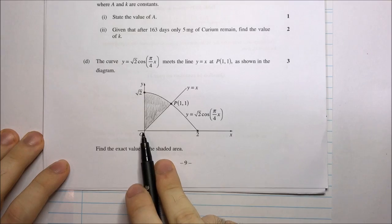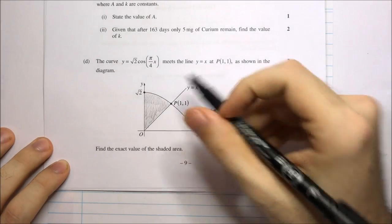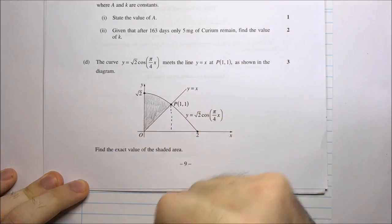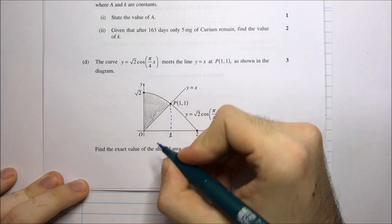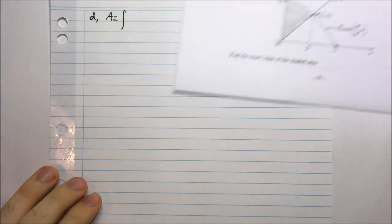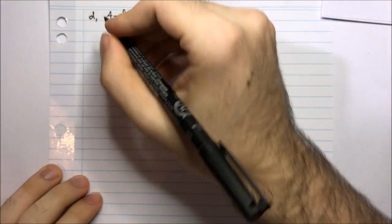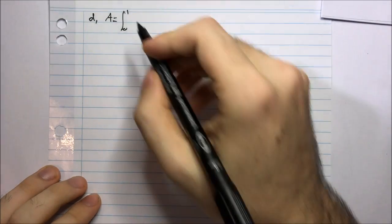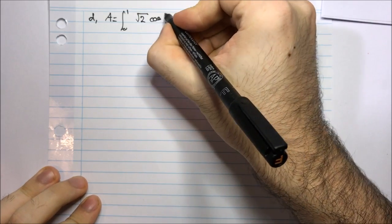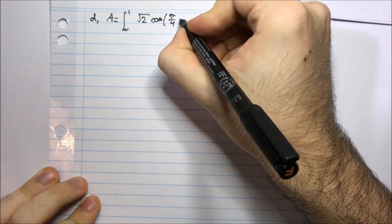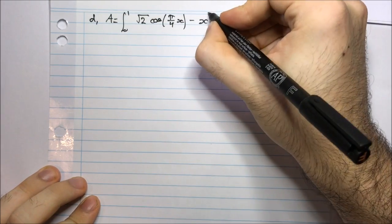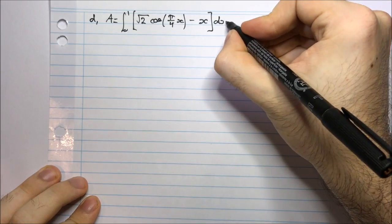The top curve is y equals root 2 cos(π/4 · x) and the lower curve is y equals x. My area is going to be the integral. The bounds are from x equals 0 to x equals 1, so those are my bounds between 0 and 1. My top curve was root 2 cos(π/4 · x) and the bottom curve was y equals x, integrating with respect to x.